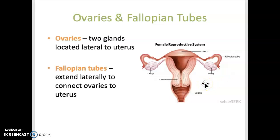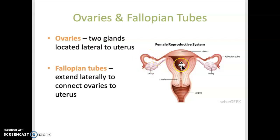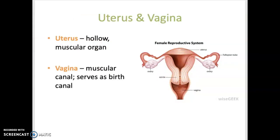The fallopian tubes extend laterally from each side of the uterus out towards each of the ovaries, and they carry the ovulated ovum towards the uterus. When ovulation occurs, the ovum moves into the fallopian tube and gradually travels through it to get into the uterus. The uterus itself is a hollow muscular organ located behind and slightly above the bladder. This is the location for implantation — where the fertilized egg will implant itself and ultimately develop into a fetus.